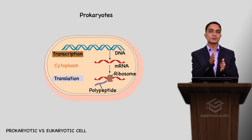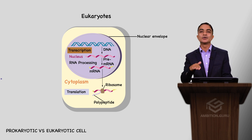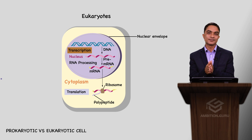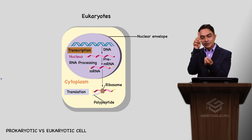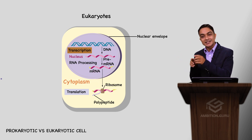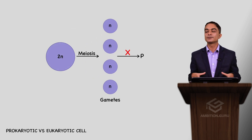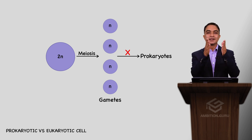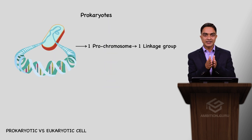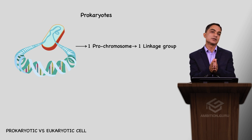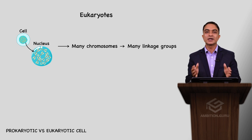A very important process: in prokaryotes, both transcription and translation occur in the cytoplasm. In eukaryotes, transcription occurs in the nucleus and translation occurs in the cytoplasm. Gametes are not formed in prokaryotes, while gametes are formed in eukaryotes. Linkage groups: prokaryotes have one linkage group (one chromosome), while eukaryotes have multiple linkage groups corresponding to multiple chromosomes.